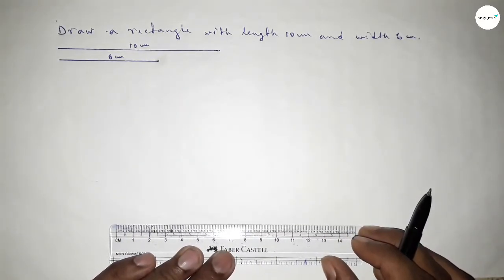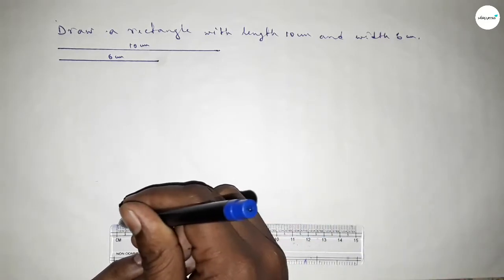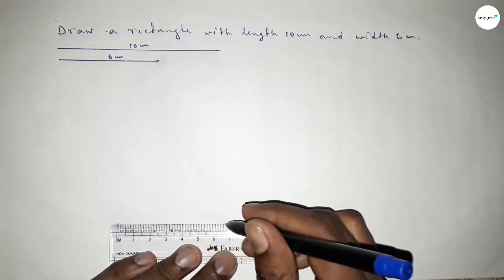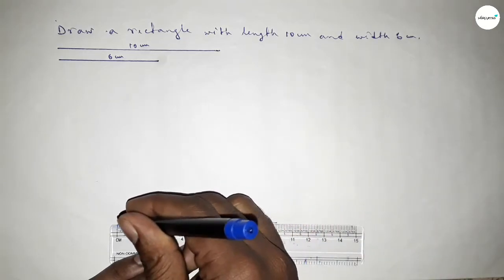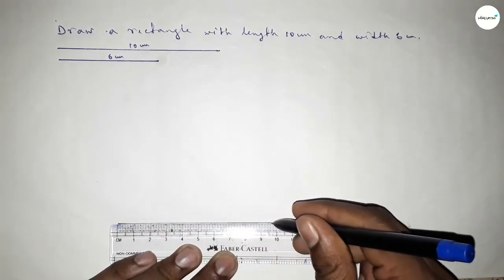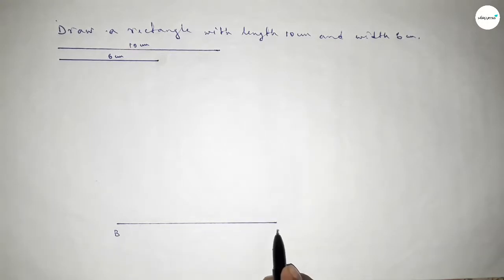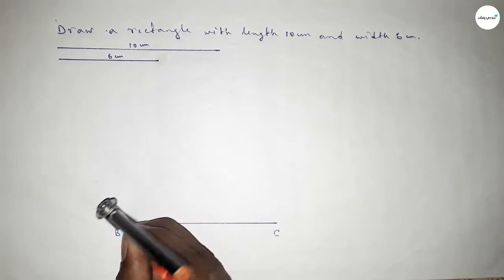Now we have to draw a line of length 10 centimeter. Drawing here a line of length 10 centimeter — this is 10. Taking here point B and here point C. Now we have to draw a 90 degree angle at point B.